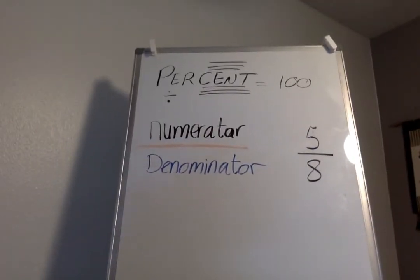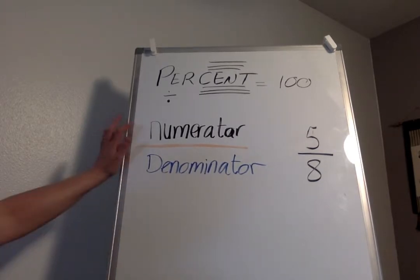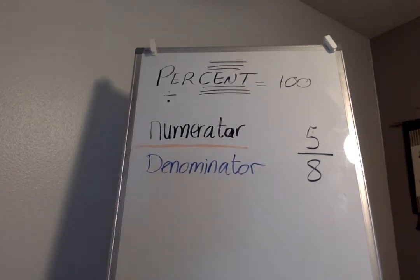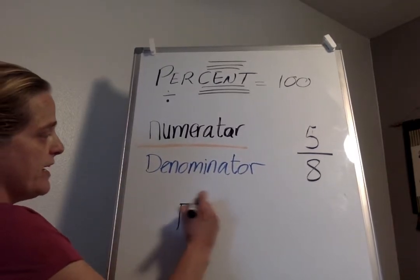Remember, percent—'per' means divide, 'cent' means 100. In a fraction you have a numerator and a denominator. In this example we have 5 over 8. Let's take that and make it a decimal, so we put 5 inside the house, the dividend, divide by 8.